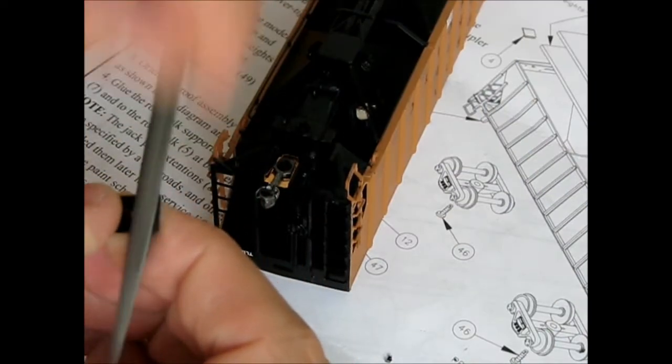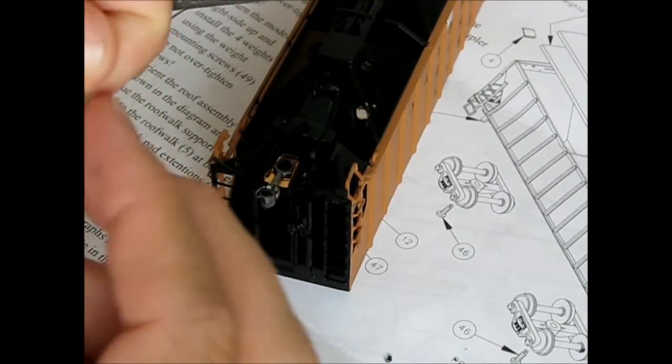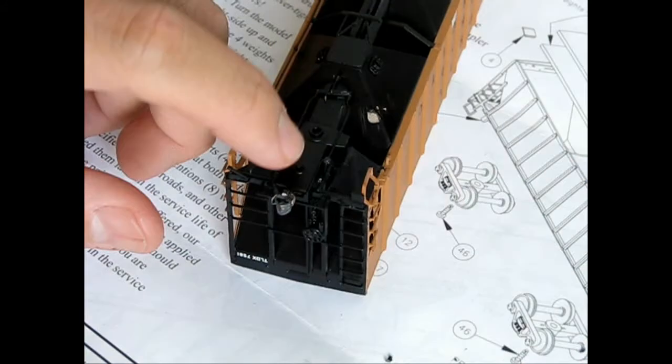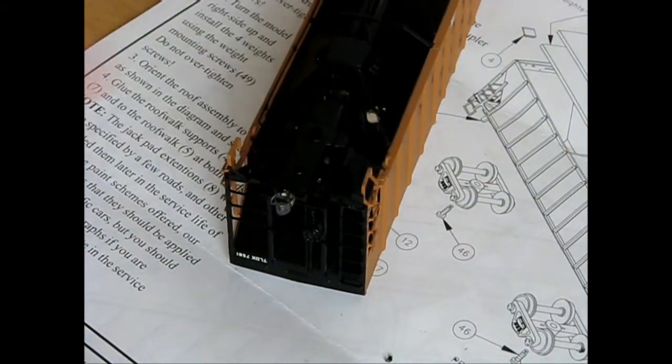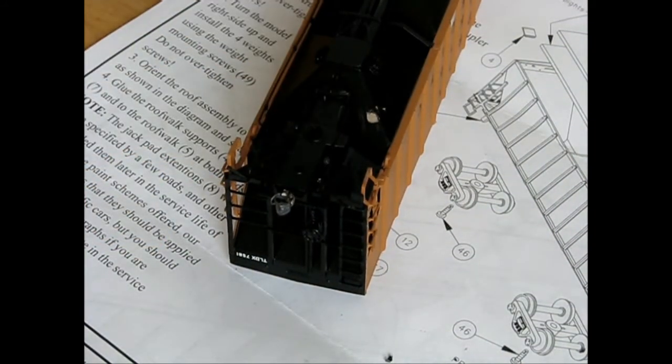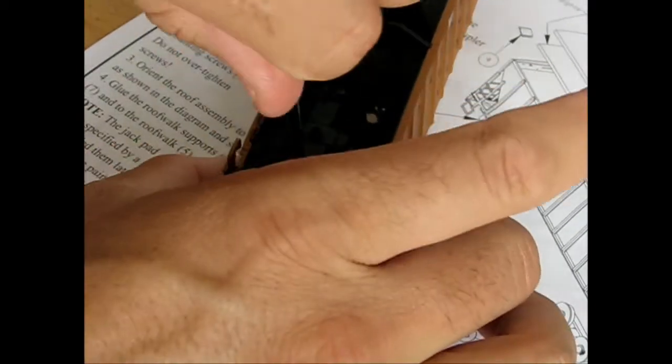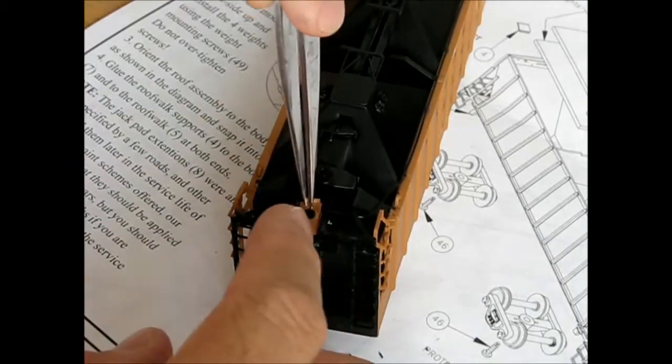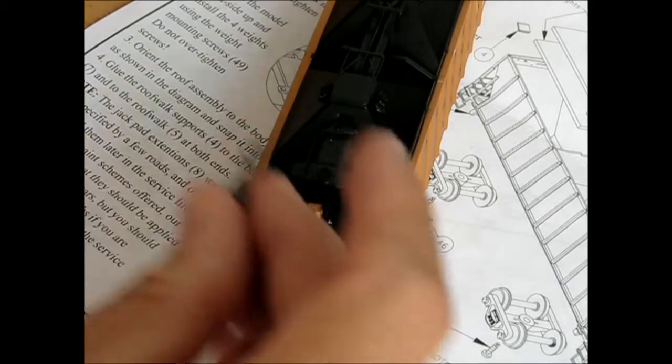Here KD No. 58 metal couplers were used in lieu of the standard supplied plastic proto-couplers. The No. 58s appear more prototypically sized and seem to outlast plastic molded couplers, especially given the massive amount of weight that will be installed in this car.